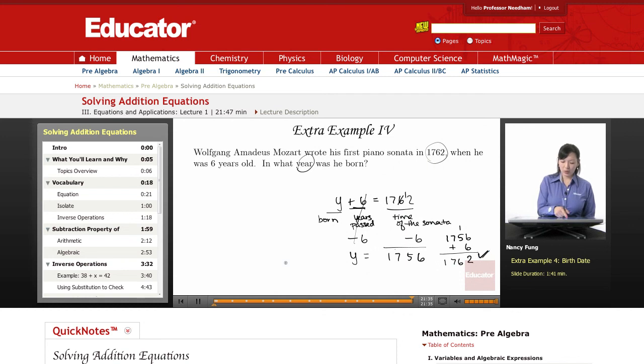Correct. So in what year was he born? He was born in 1756. And years don't have any type of unit, so you could just leave it 1756. Thank you for watching Educator.com.